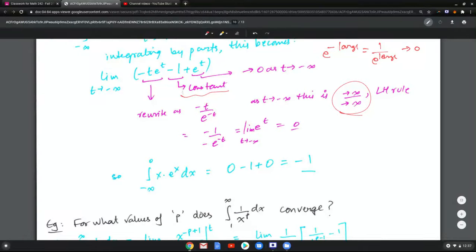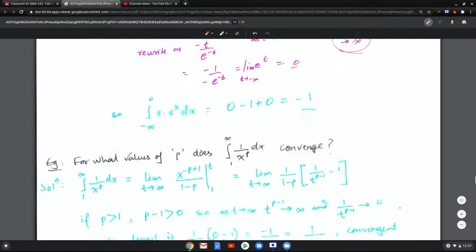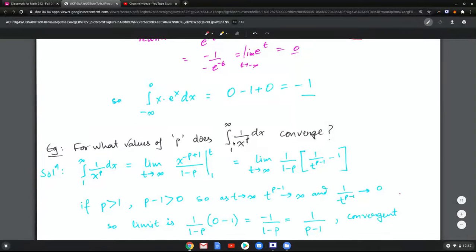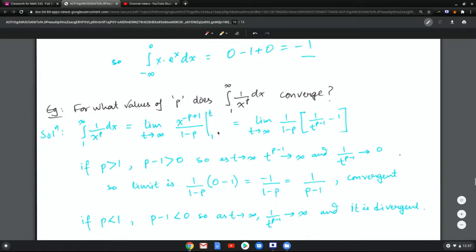Now the next example is a very common type of question where you are trying to find, for what values of p does this integral converge? Now meaning converge means that when you find the limit it should come out to be a finite number. So we go through the process 1 to t and now we end up with this particular limit.